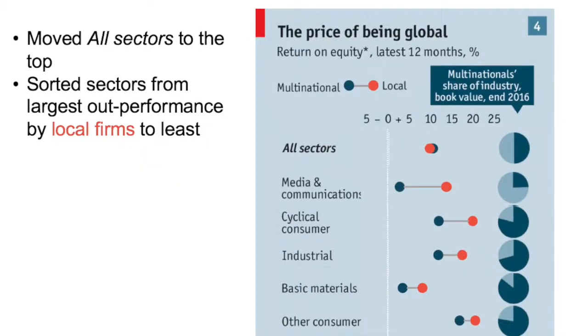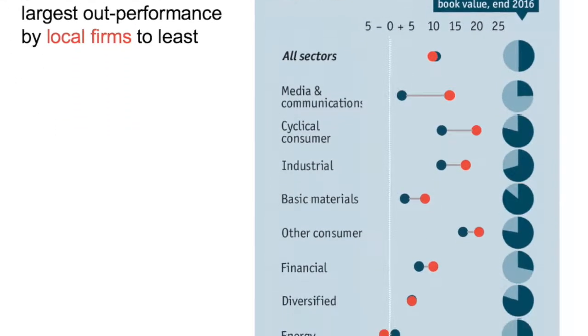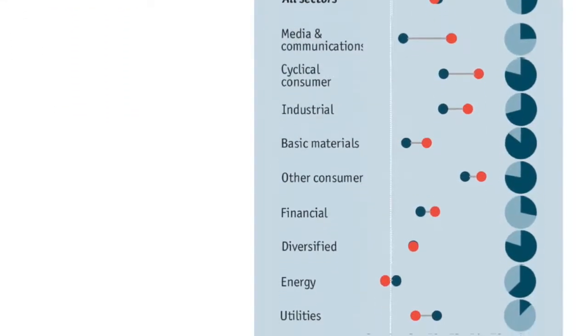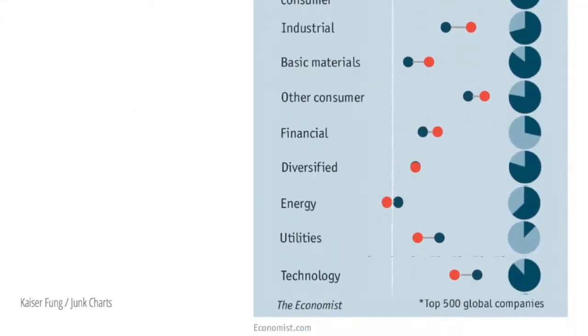This pulls out the story of the data graphic — that in certain industries such as utilities and consumer goods, there is indeed a price of being global in terms of lower return on equity.